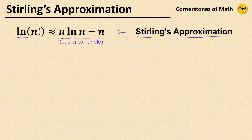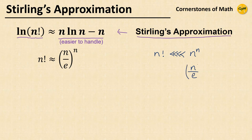If we remove the logarithms, we can write Stirling's approximation as n! ≈ (n/e)^n. Therefore, Stirling's approximation can be interpreted as follows: obviously n! is much smaller than n^n, but if we compensate by dividing n with e — the base of the natural logarithm — then its nth power is actually quite close to n!.